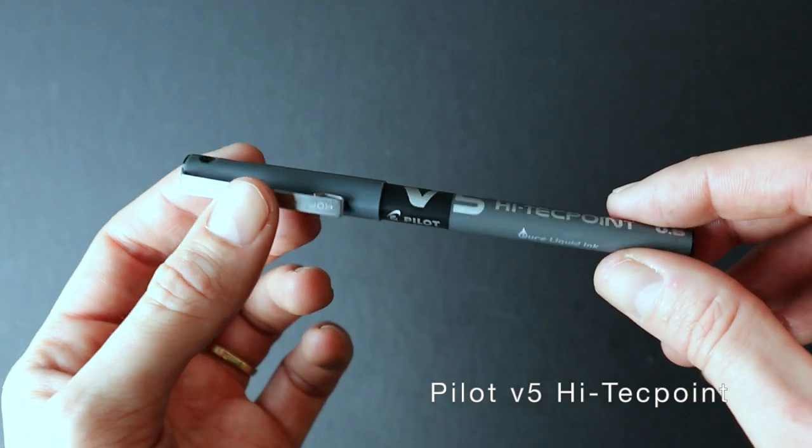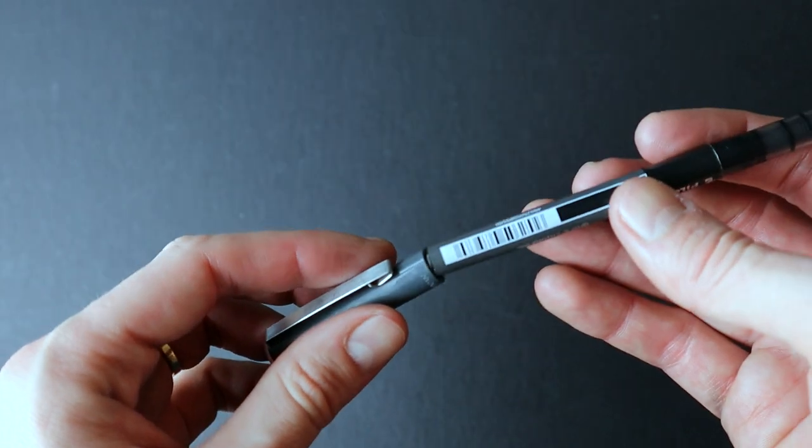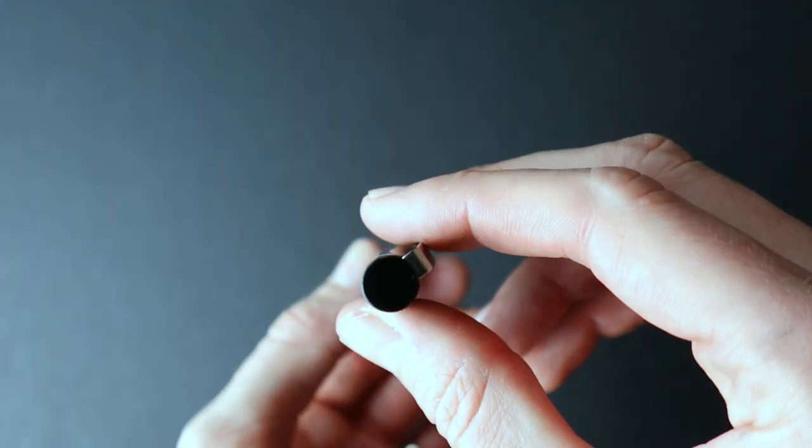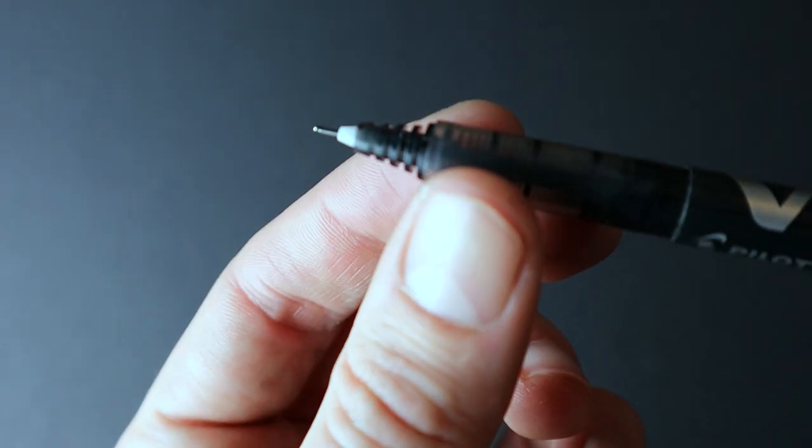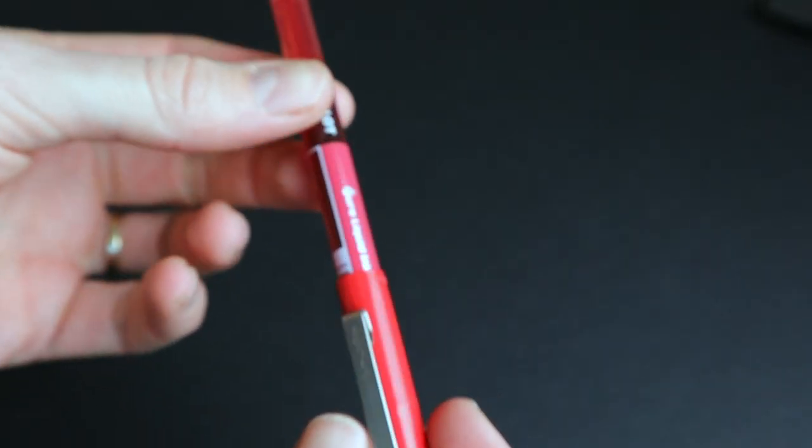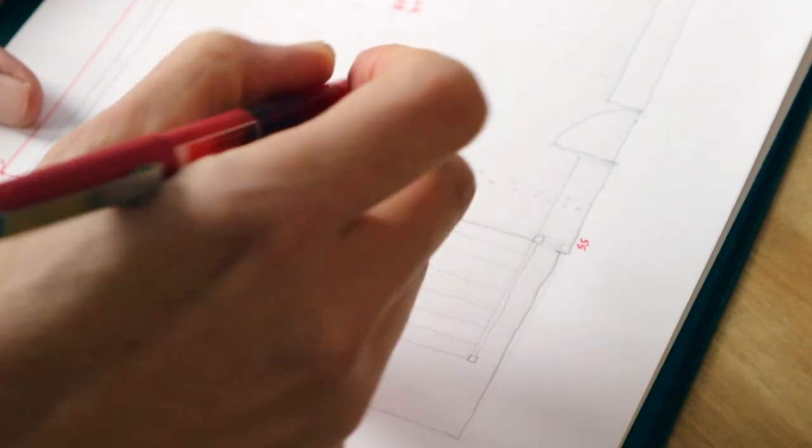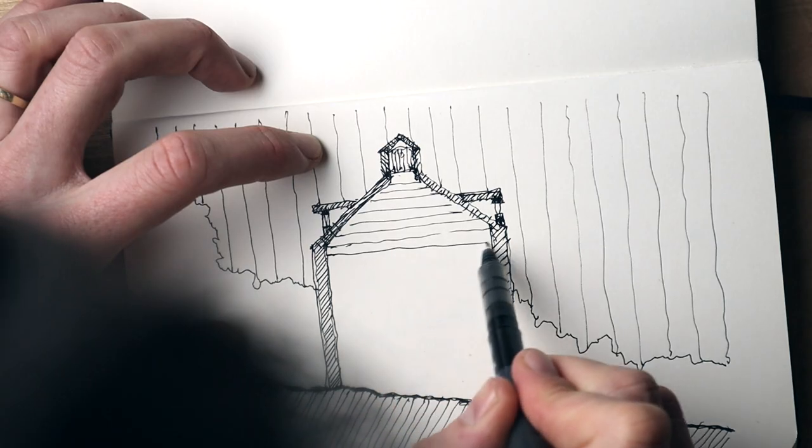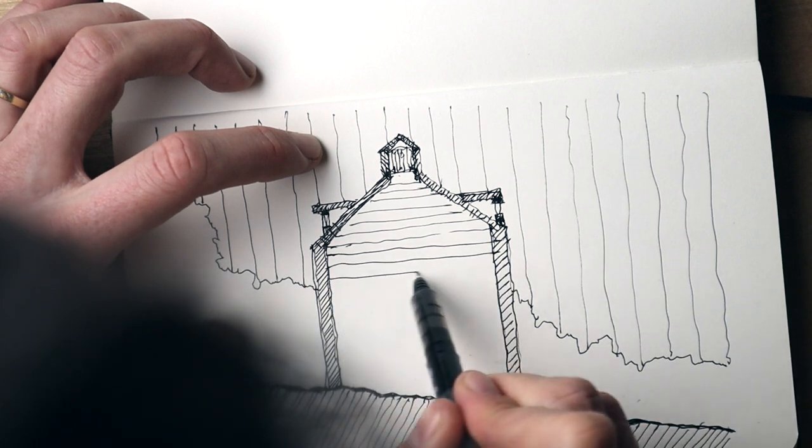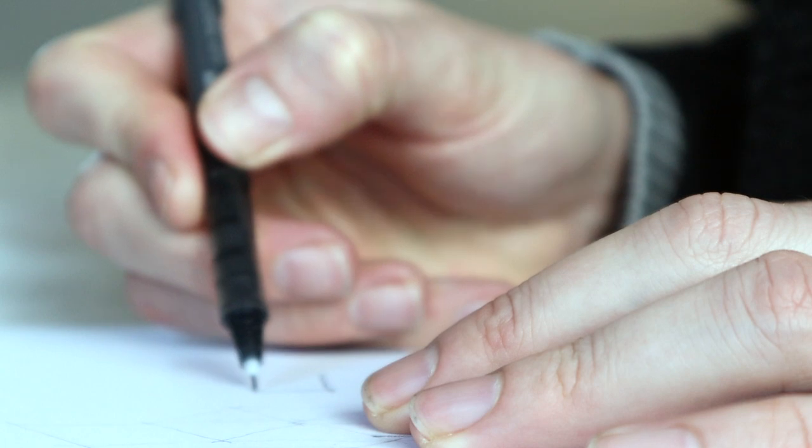Next up is the Pilot V Hi-Tech Point Rollerball Pen. I'm using the 0.5mm with black ink, and I find this pen gives me flexibility with my line work. I also have a red one, which is useful for doing markups and adding notes when surveying. The nib provides really precise lines, and the flow of ink seems both controlled and consistent.